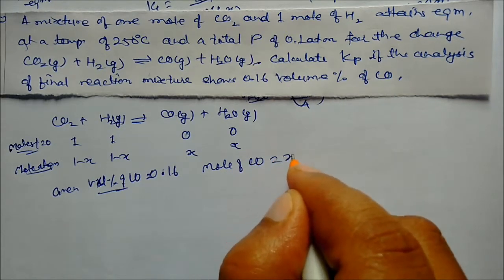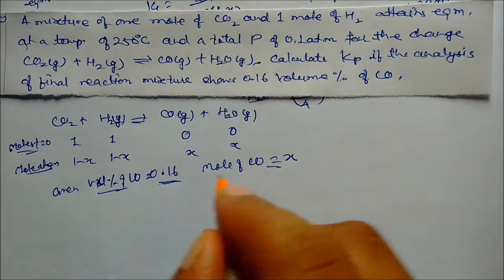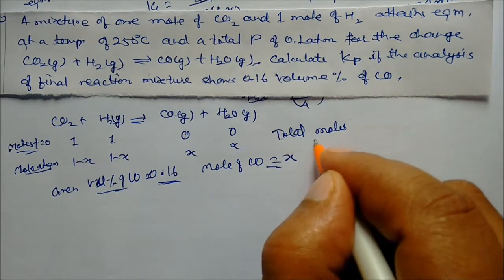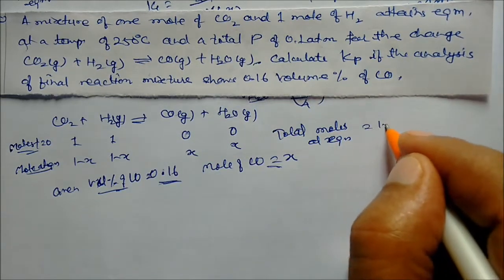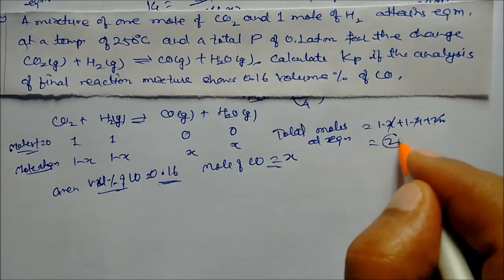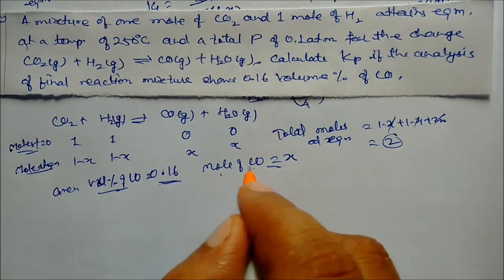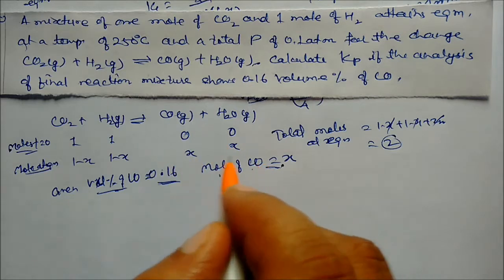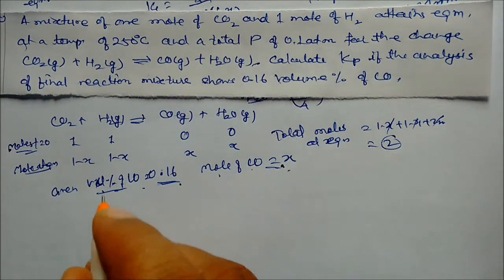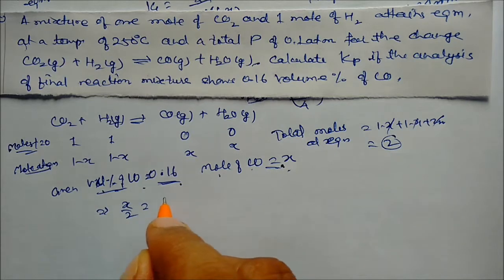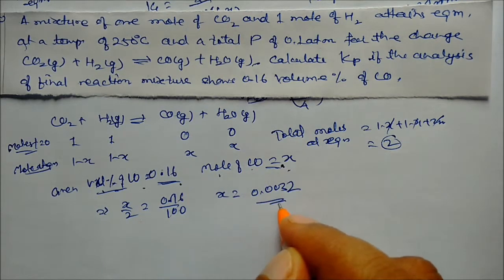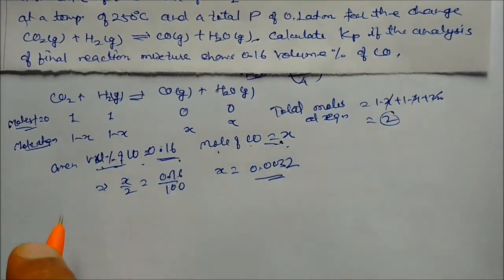Moles at equilibrium: CO₂ = 1 − x, H₂ = 1 − x, CO = x, H₂O = x. Total moles = 2. Volume percent of CO = (x/2) × 100 = 0.16, so x = 0.0032.